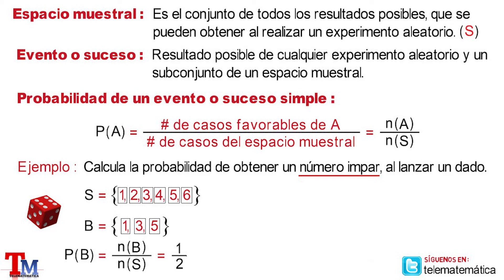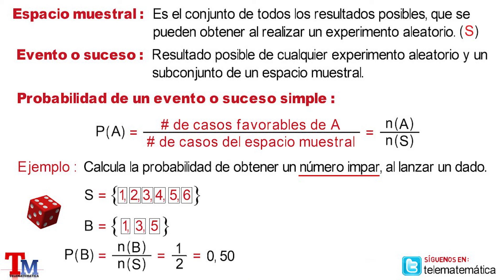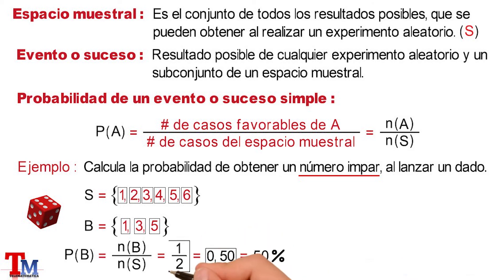Now, generally, probabilities are expressed as a fraction or as a percentage. To convert to percentage, we simply solve the fraction and multiply the result by 100. Then we would have 0.50, and multiplying by 100, the result would be 50%. This means the probability of getting an odd number when launching a die is 1/2 or 50%.